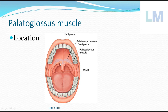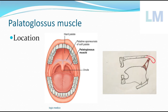Palatoglossus forms the anterior boundary of the tonsillar fossa, where we can see the palatine tonsil. If you stretch your tongue out and look in a mirror, you can make out this fold — the palatoglossal fold of mucous membrane. Within this palatoglossal fold, there is a muscle with the same name: palatoglossus. That is the location of the palatoglossus.